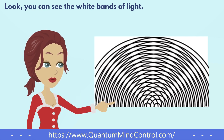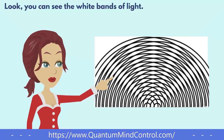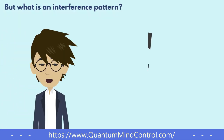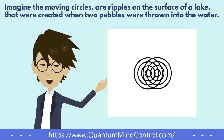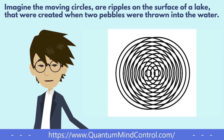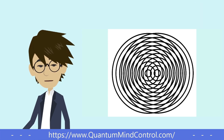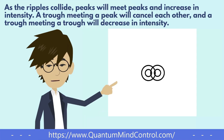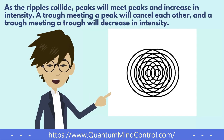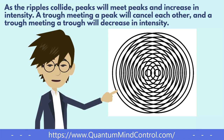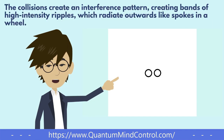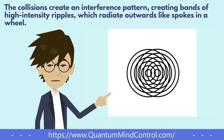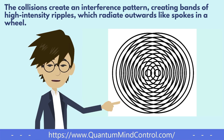Look, you can see the white bands of light. But what is an interference pattern? Imagine the moving circles are ripples on the surface of a lake that were created when two pebbles were thrown into the water. As the ripples collide, peaks will meet peaks and increase in intensity. A trough meeting a peak will cancel each other, and a trough meeting a trough will decrease in intensity. The collisions create an interference pattern, creating bands of high-intensity ripples which radiate outwards like spokes in a wheel.